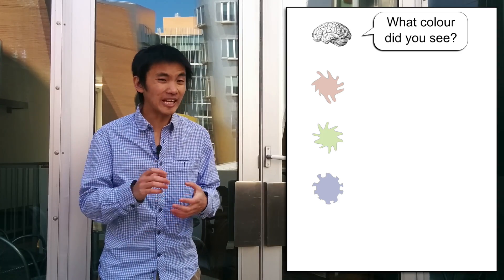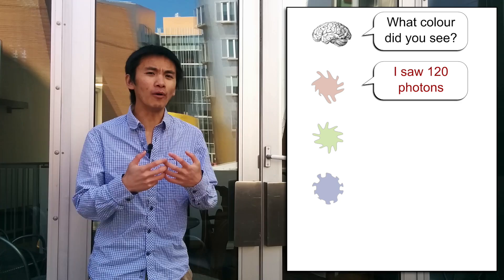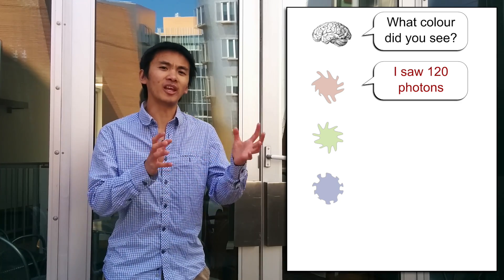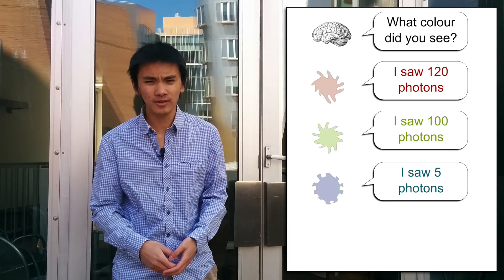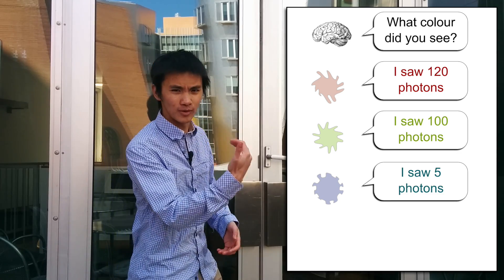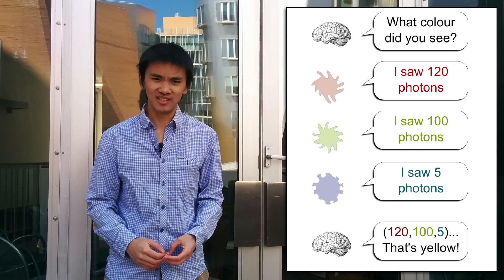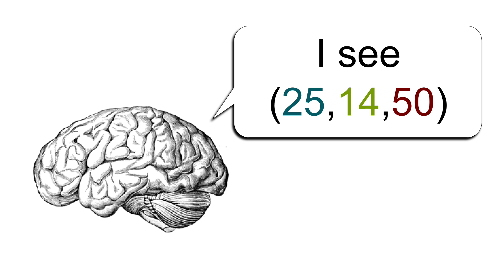So when our eyes see the color, what it actually sees is the number of photons detected by each detector. So it has a number of photons for the blueish detector, the number of photons for the greenish detector, and another one for the reddish detector. In other words, what our brain sees as a color is in fact a collection of three numbers which mathematicians call a 3D vector.